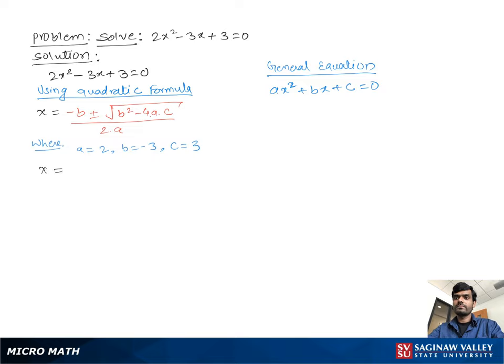Now, comparing the original equation with the general equation, we get a equal to 2, b equal to negative 3, and c equal to 3. Now, substituting these values into the quadratic formula,